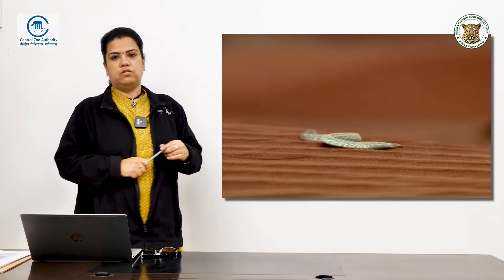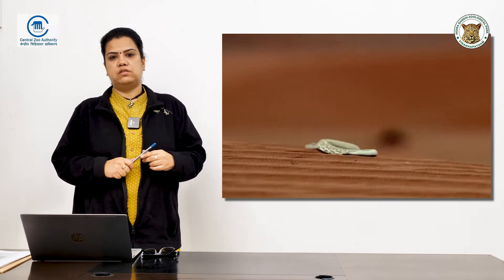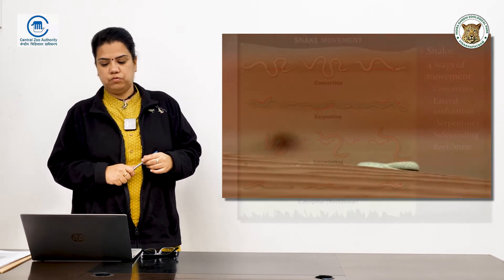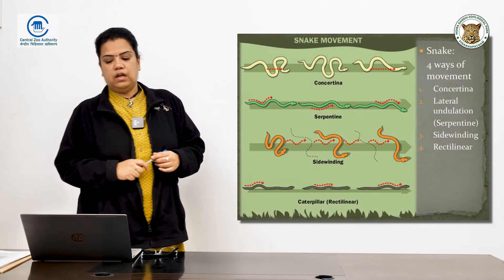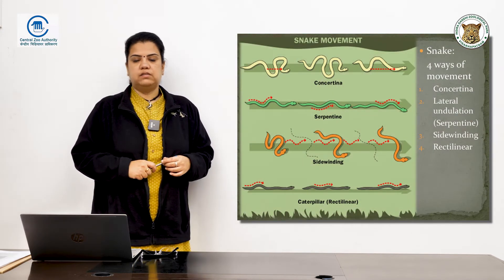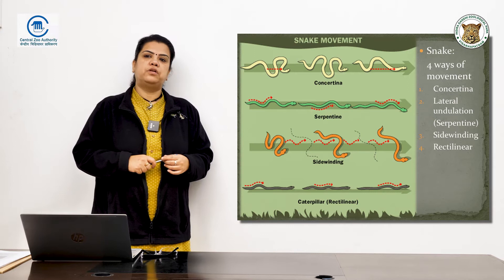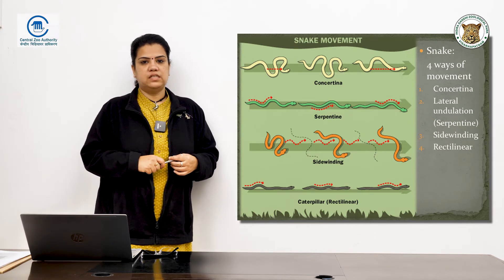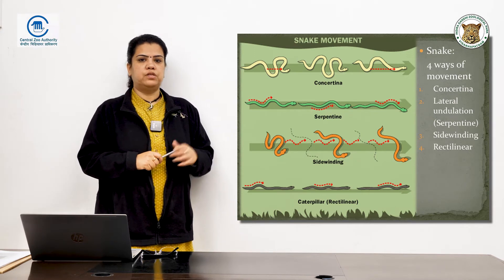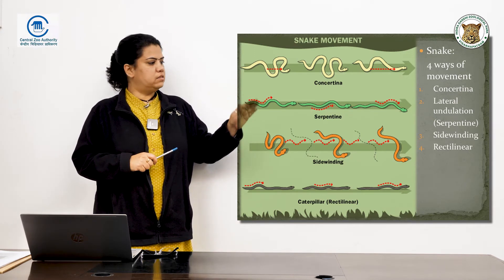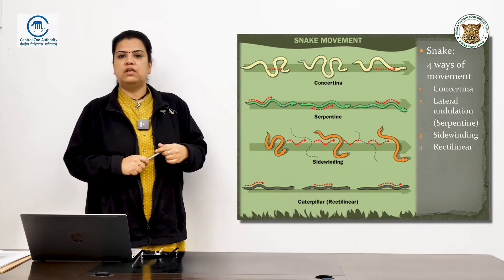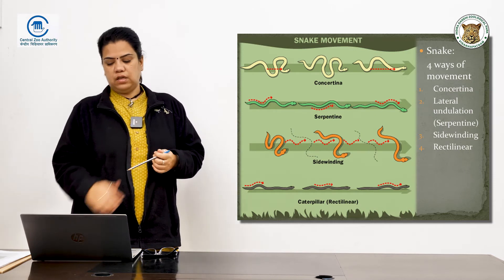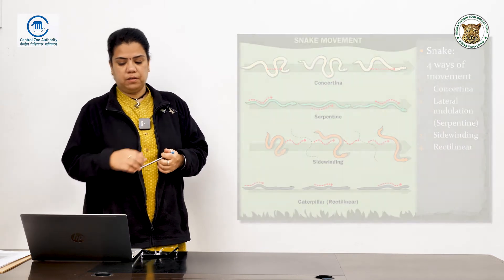With sidewinding, only two parts of the body touch the ground when moving. The last movement is a caterpillar-like motion called rectilinear movement, and it is seen in very few snakes in our country.